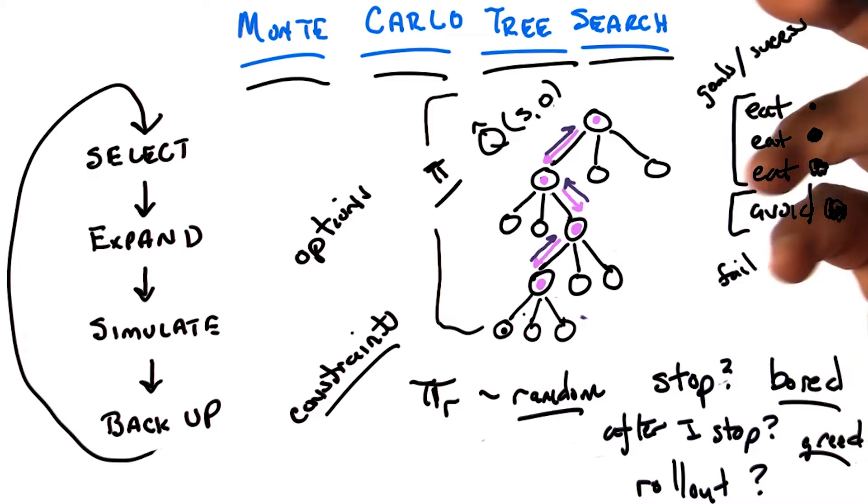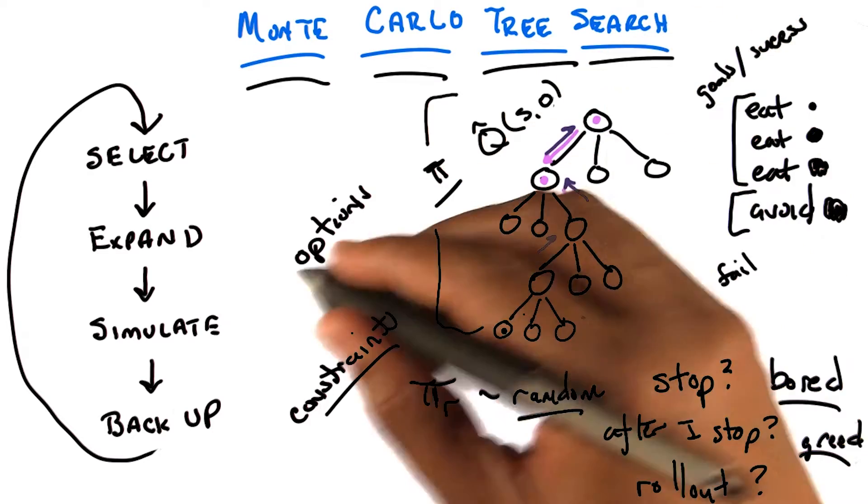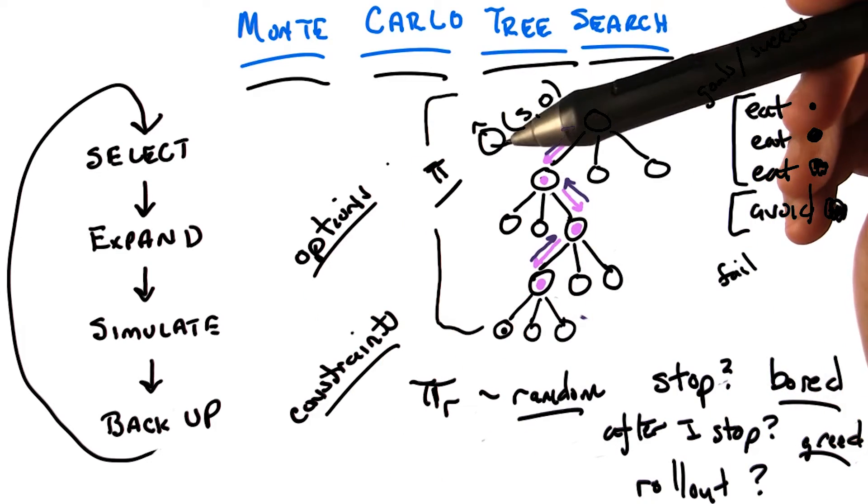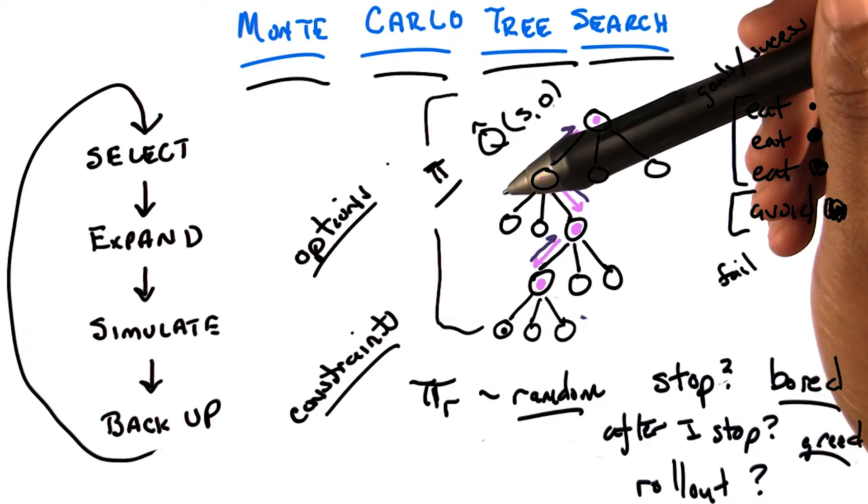Yeah. I mean, it's the same kind of idea as in the option case that we talked about already. Except now we're in trees instead of grids. Yes. But trees and grids, it turns out they're all the same thing.